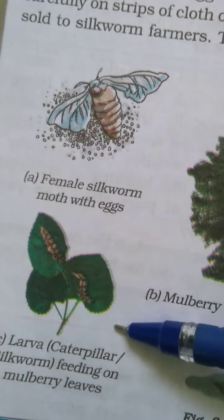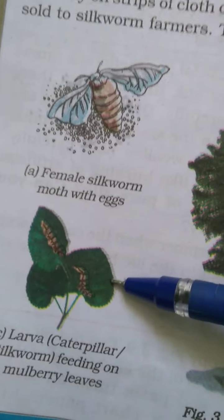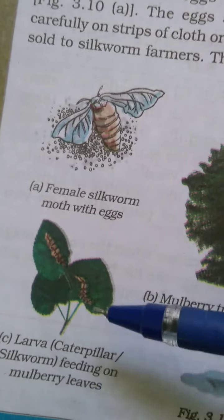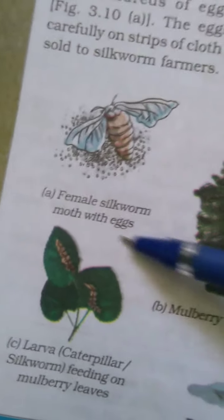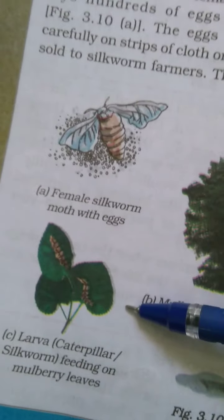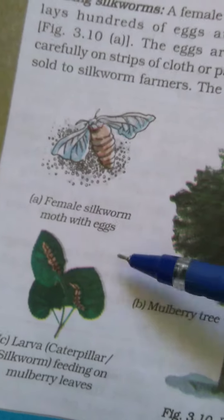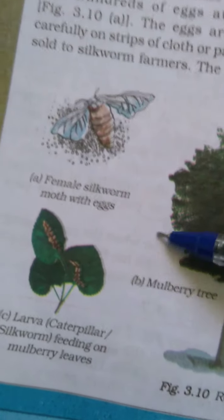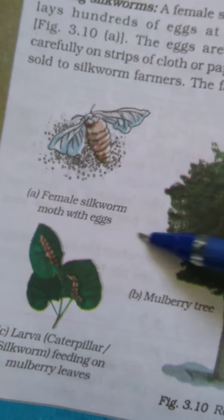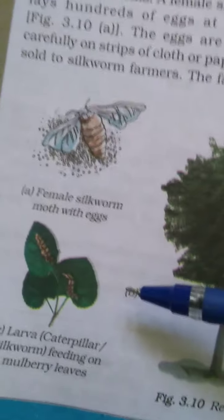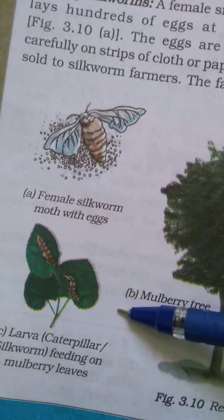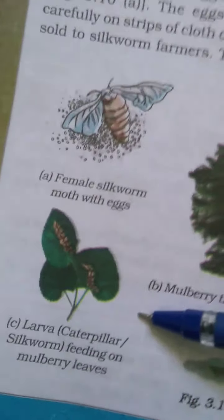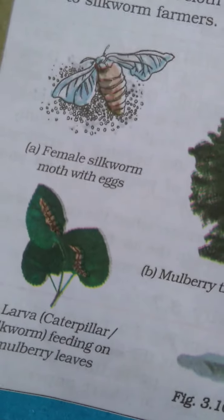The larva eats day and night and increases enormously in size. Larvae with mulberry leaves can be kept on clean bamboo trays. The mulberry leaves are chopped and the larvae are safely kept on bamboo trays.